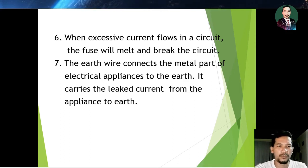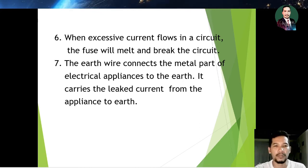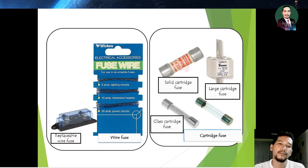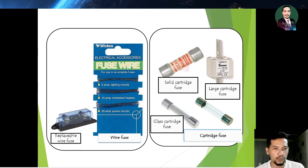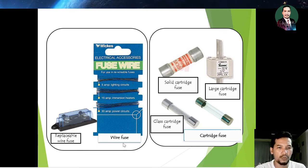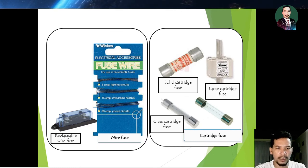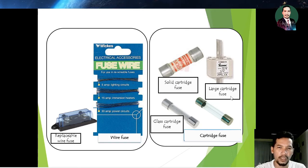When excessive current flows in the circuit, the fuse will melt and break the circuit. The earth wire connects the metal part of electrical appliances to the earth and carries any leakage current from the appliances to earth. Examples of fuses include the replaceable wire fuse, wire fuse, and cartridge fuse — which cannot be replaced and is single use only. We have both large cartridge fuses and glass cartridge fuses.